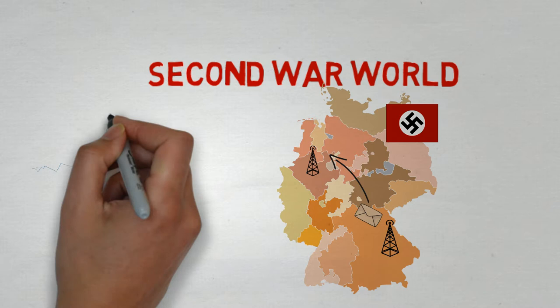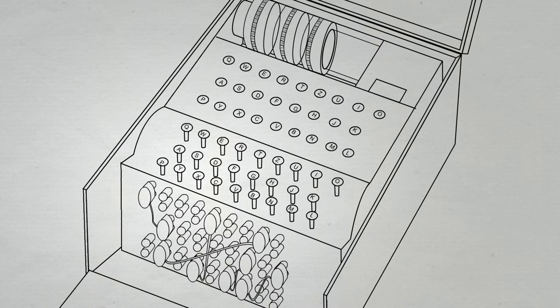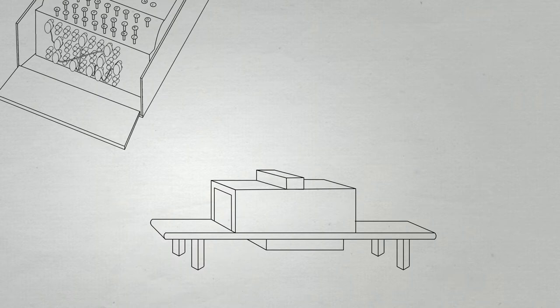In the Second World War, the German military needed a way to securely transmit messages to each other without worrying that their enemies could read them. This led to the adoption of a special coding machine known as the Enigma machine.